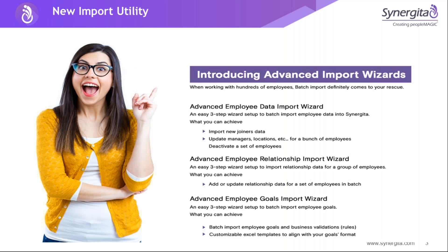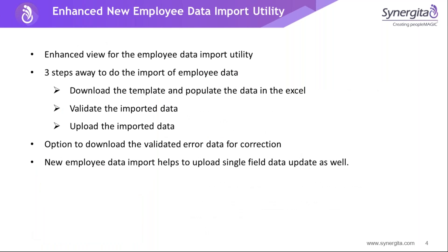First, we'll cover the new import utility. The new import utility has been done in three import facilities: for employee data, employee relationship data, and employee goals. This import facility can be done in simple three steps. Let me show you that one by one. So first, we can see about the employee data import utility — it is a three-step process. First, you have to download the template and then populate the necessary data into the Excel file, then validate the imported data and upload it.